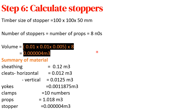Summary of materials needed for this formwork: sheeting material 0.12 m³, horizontal cleats 0.012 m³, vertical cleats 0.0125 m³, yokes 0.001875 m³, clamps 10 units, props 1.0182 m³, and stoppers 0.00004 m³. On our next video we are going to look at the cost of erecting this formwork. Thank you for your time and support — until next time, bye!